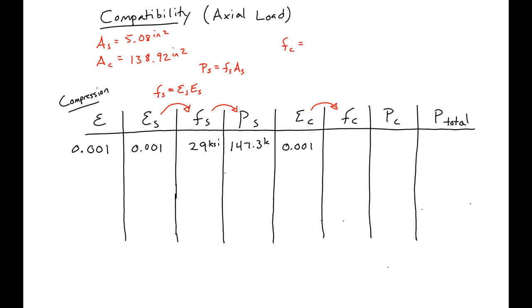We'll say our FC is equal to 2 times our F prime C times EC over epsilon naught divided by 1 plus epsilon C over epsilon naught squared. So we can use that here to go from EC to FC, and this will give us around 3 ksi.